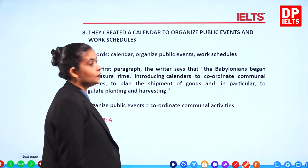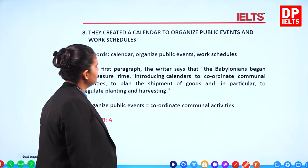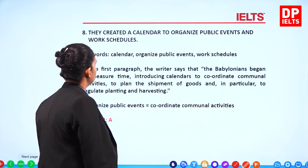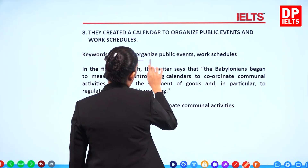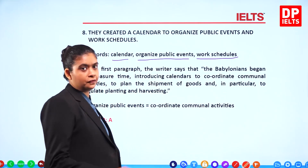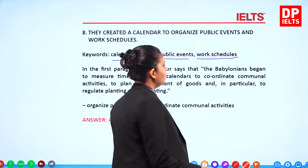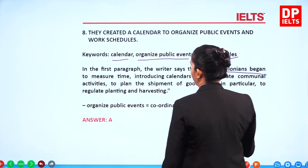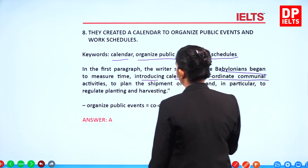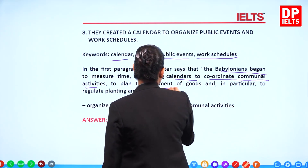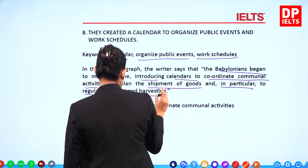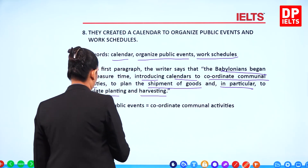Question 8: 'They created a calendar to organize public events and work schedules.' Keywords: calendar, organize public events, work schedules. In paragraph A, the writer says the Babylonians began measuring time by introducing calendars to coordinate communal activities, plan the shipment of goods, and regulate planting and harvesting. So the answer is A.